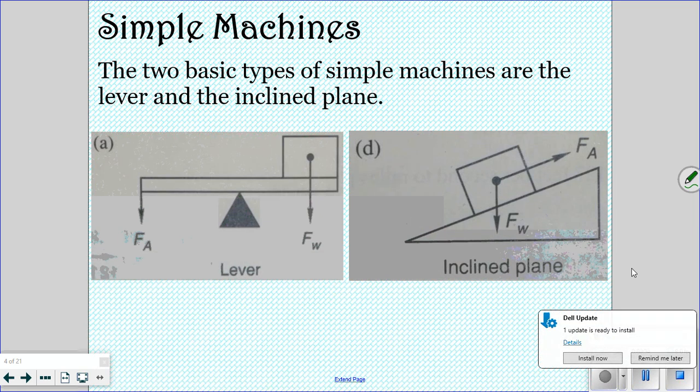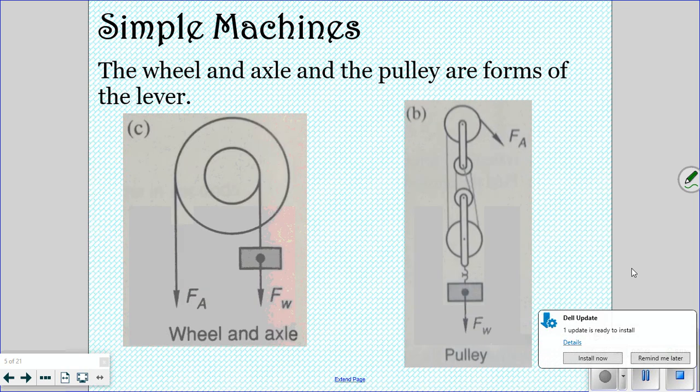If you've ever moved something, you may have learned that it's easier to push it up a slope than to try and just pick it up completely by yourself. The wheel and axle and the pulley are forms of the lever. So this is your wheel and axle and then this is a set of pulleys.